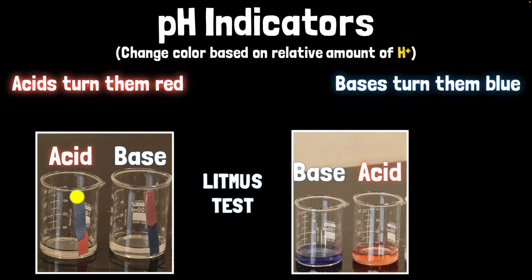But the litmus test can only tell you whether something is acidic or basic. It doesn't tell you how acidic or how basic it is. And for that, we have something called the pH paper and universal indicators.